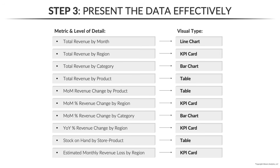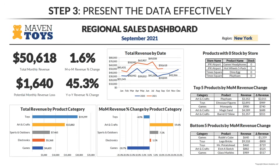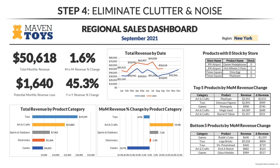Let's see what it looks like if we just dump all those visuals on the report canvas. Well, we'd end up with something like this. Technically we've checked all the boxes — defined a clear purpose, chosen the right metrics and chart types — but obviously our work isn't done. It's cluttered, it's noisy, there's no intuitive layout or flow. So it's time to leverage some visualization and storytelling best practices, starting with eliminating clutter and noise.